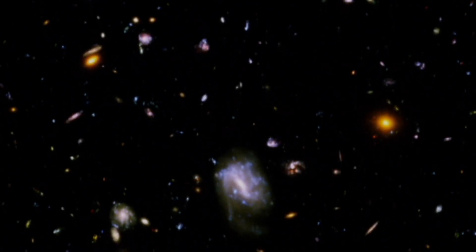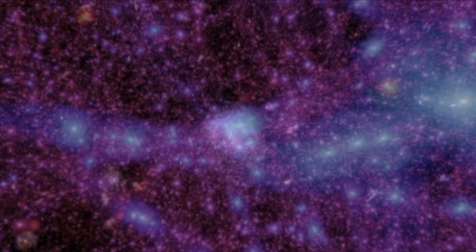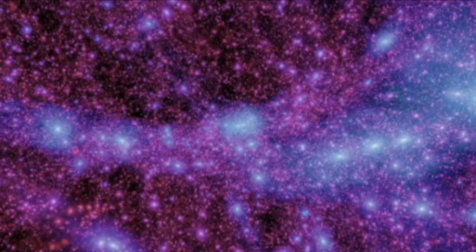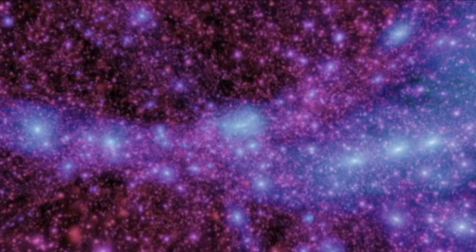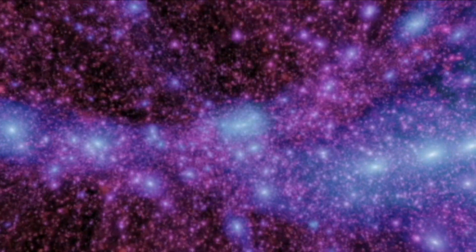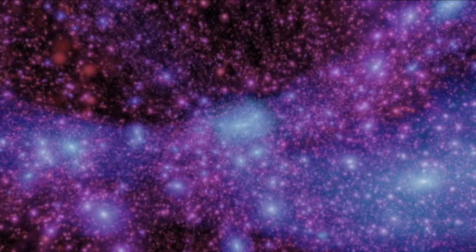Galaxies are the visible building blocks of the universe. Theories developed through observation give us a preferred picture of the assembly of galaxies. It seems that small objects formed first, and then were drawn together by gravity to form larger ones.